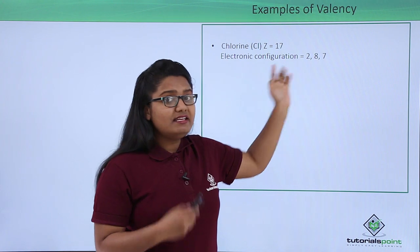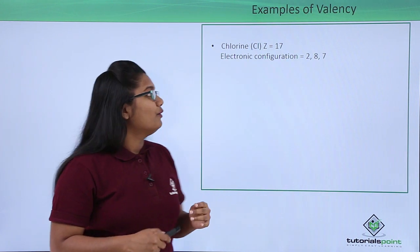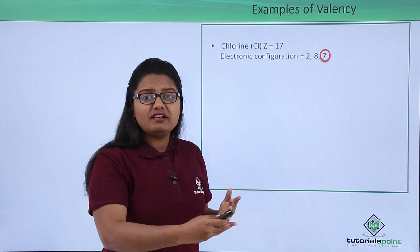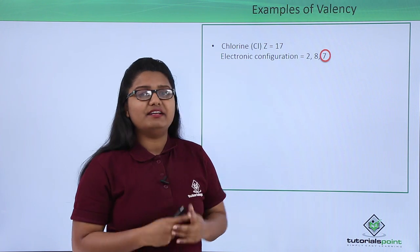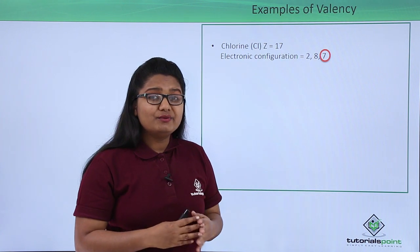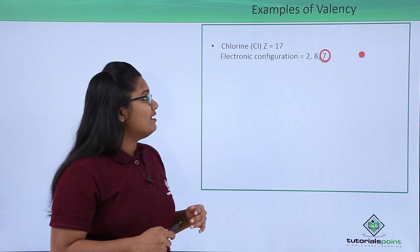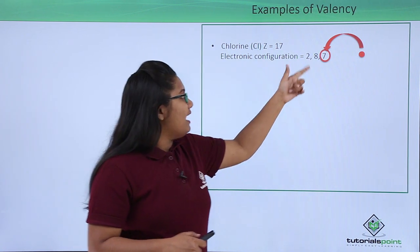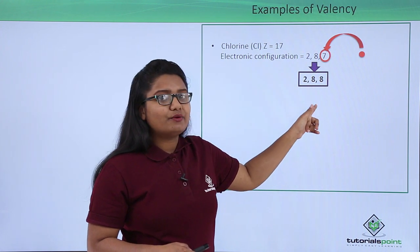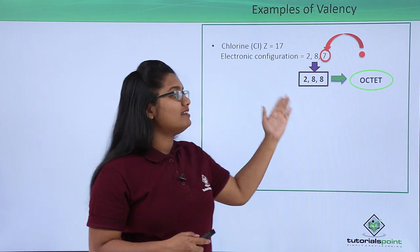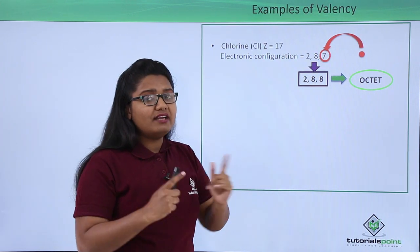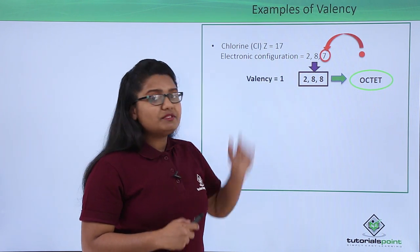We see that 7 is nearly close to 8. So chlorine also has two choices: lose seven electrons or acquire one electron. Acquiring one electron is quite easier than losing seven electrons. So chlorine acquires one electron to have an electronic configuration of 2, 8, 8 — again, 8 electrons in the outermost shell, which means it is an octet. Since chlorine has acquired one electron, its valency is 1.